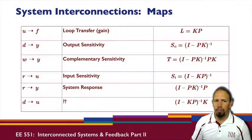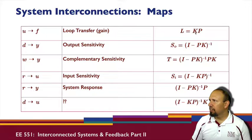Some of these transfer functions have names. So the transfer function from U to F is called the loop transfer gain, and it's just given by the product of K and P. The transfer function from the disturbance to Y is called the output sensitivity function SO, and it's given by this.